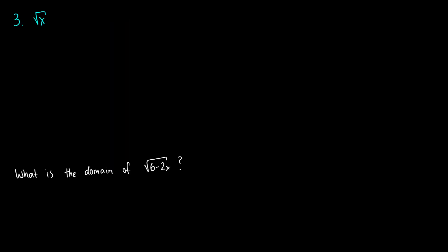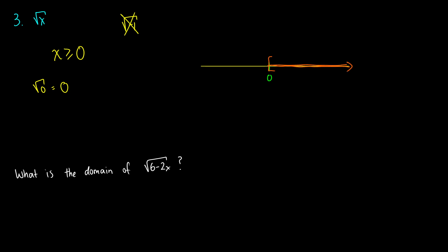What if we have the square root of x? We cannot take the square root of a negative number, so we have a restriction: x has to be greater than or equal to 0. It can equal 0 — the square root of 0 is just 0, and that's fine. On a number line, we include 0 and take everything upward. Because we're including it, we use a square bracket and say the domain of this function is from 0, including it, to infinity.